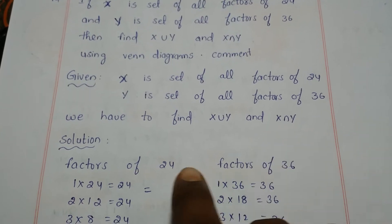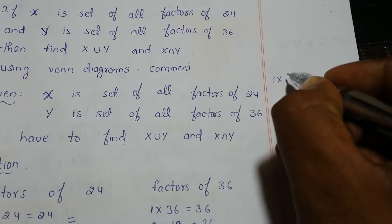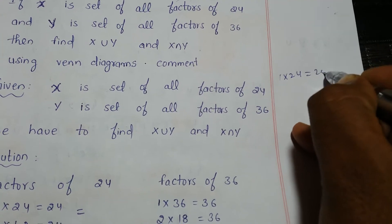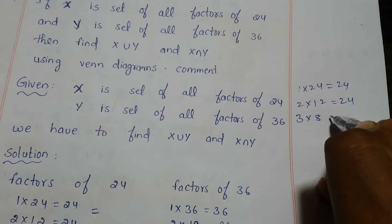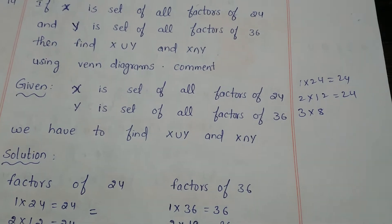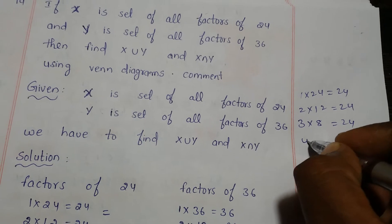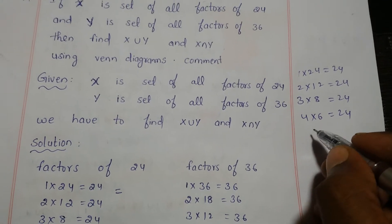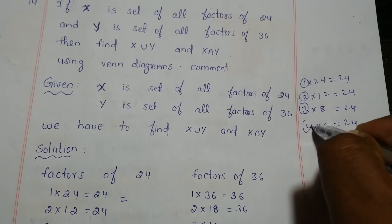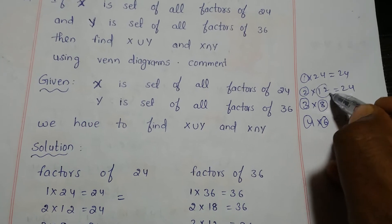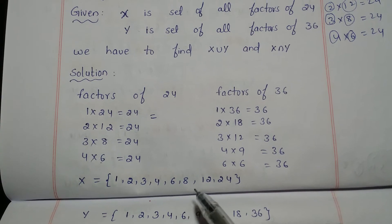First, write the factors of 24: 1×24=24, 2×12=24, 3×8=24, 4×6=24. So the factors of 24 are {1, 2, 3, 4, 6, 8, 12, 24}.